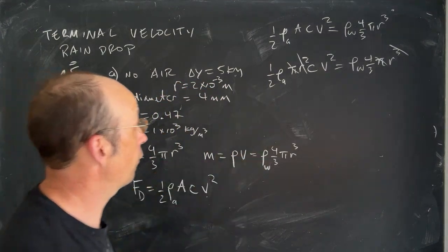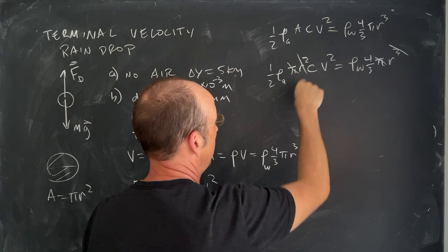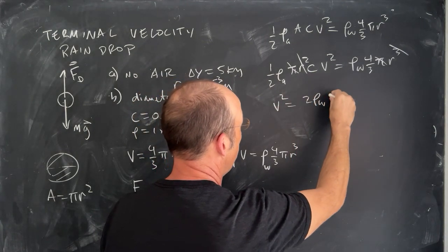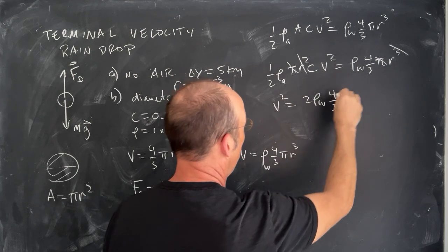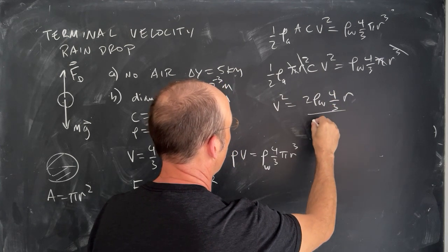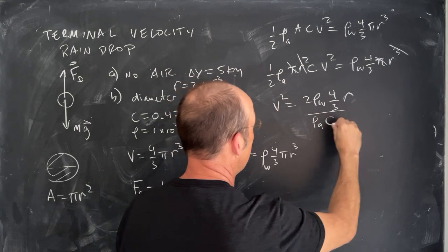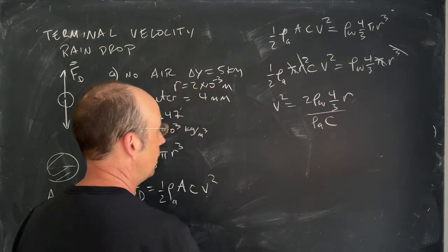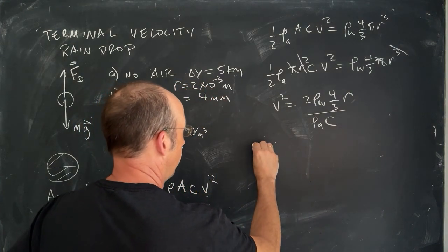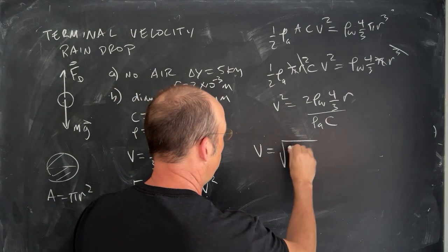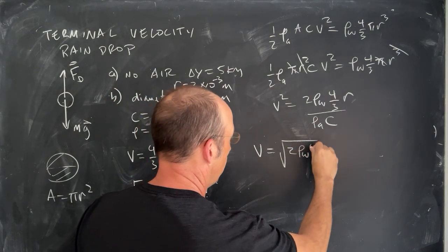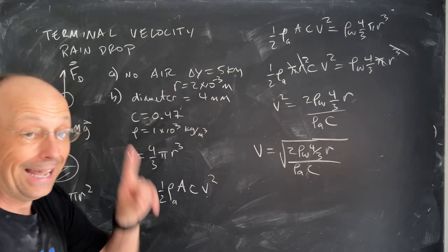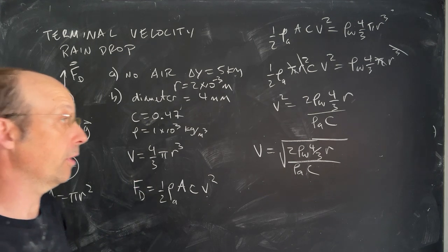Now let's solve for v. Multiply by two. Divide by the density. Divide by that. V squared is going to be two rho w four-thirds r over rho air times c, the drag coefficient. And then I can find the velocity by taking the square root. So v is going to be the square root of two rho w for water four-thirds r over rho air c. Now, before I put my numbers in, I want to show you something really important.